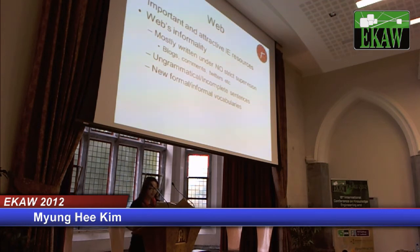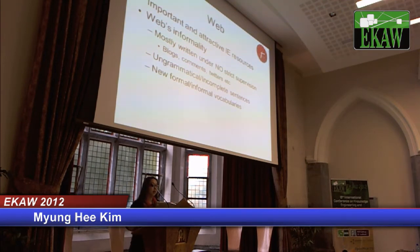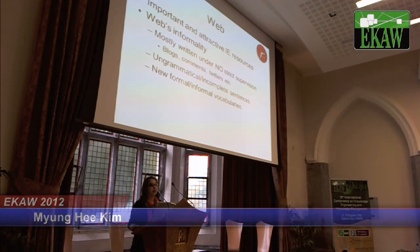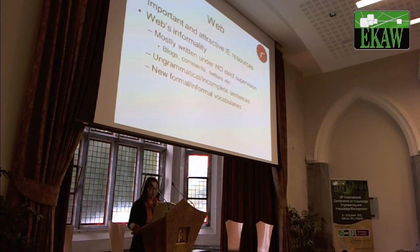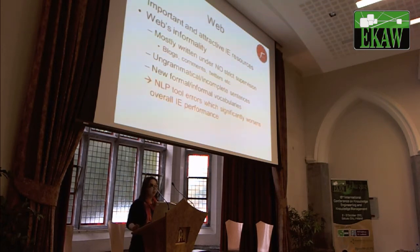The web is a very important and attractive NLP resource since it has a huge amount of information, especially unstructured text. Unfortunately, most web texts are written without strict supervision, like journalistic text such as blogs, comments, and tweets, so users can write anything. It often has ungrammatical or incomplete sentences and many formal and informal abbreviations of vocabularies. Therefore, we get two types of errors which significantly worsen the overall NLP performance.